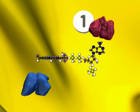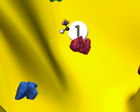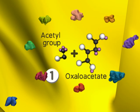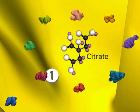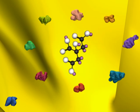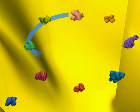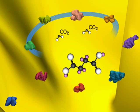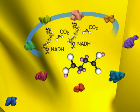In the citric acid cycle, the acetyl group from acetyl-CoA is transferred to oxaloacetate to form citrate. Four different enzymatic reactions then lead to the formation of succinate. These steps produce two carbon dioxides, two NADHs, and one ATP.